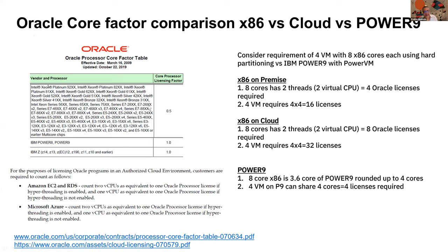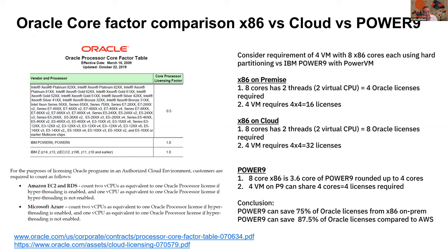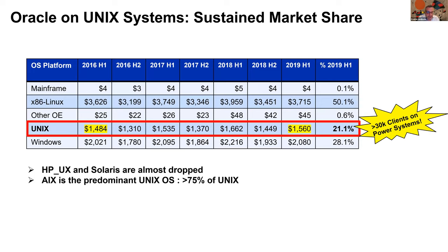It's not so much that it's technically faster or better — it does target a different type of customer — but the whole benefit is that it can reduce your license spend by up to 75 percent. Looking at Oracle market share numbers, the Unix business, which is mainly AIX on Power9, represents about 20 percent of Oracle's total license sales revenue. So it is still a very viable niche to be in.